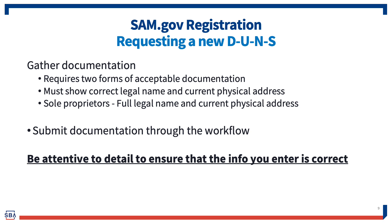When creating a new DUNS number, you'll need to gather your entity's documentation. Registration requires at least two forms of acceptable documentation. The full list of acceptable documents is provided in the DUNS number request workflow and includes documents like Secretary of State Articles of Incorporation, your taxpayer identification number confirmation letter, your employer identification number confirmation letter, lease agreements, and utility bills. These documents must clearly show the correct legal business name and current physical address. For sole proprietors, documents must include your full legal name and current physical address. You'll then submit your DUNS number request and upload the supporting documentation — pay close attention to detail, including spelling and business names. Once submitted, your DUNS number should be issued within a business day.